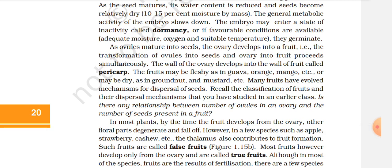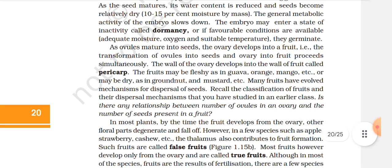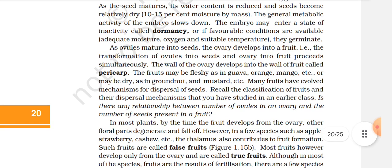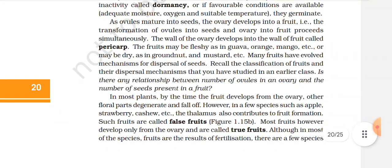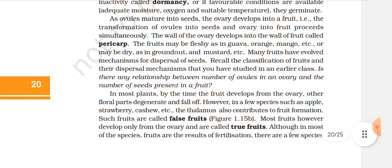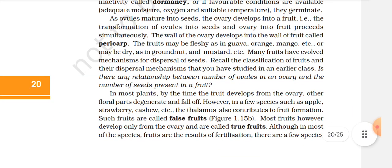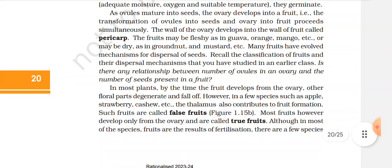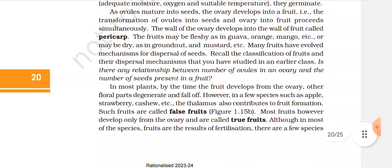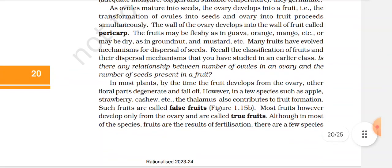The wall of the ovary develops into the wall of the fruit called the pericarp. The fruit may be fleshy — e.g., guava, mango, orange — or may be dry — e.g., groundnut and mustard. Many fruits have evolved mechanisms for dispersal of seeds.